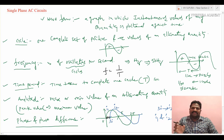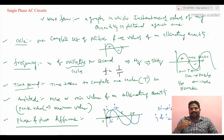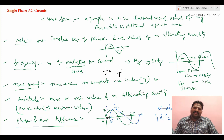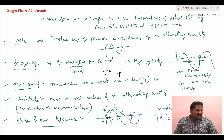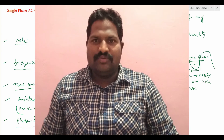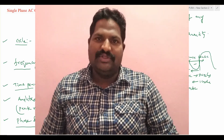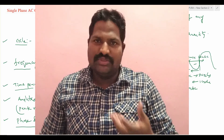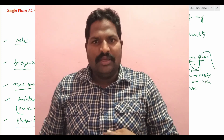If the time period of a waveform increases, then automatically the frequency of occurrence of cycles reduces. I hope everybody understands these fundamental terminologies of single phase AC circuits. In the next class, we will start discussion on average value, how to calculate average value, RMS value, and form factor. Thank you. Have a nice day.